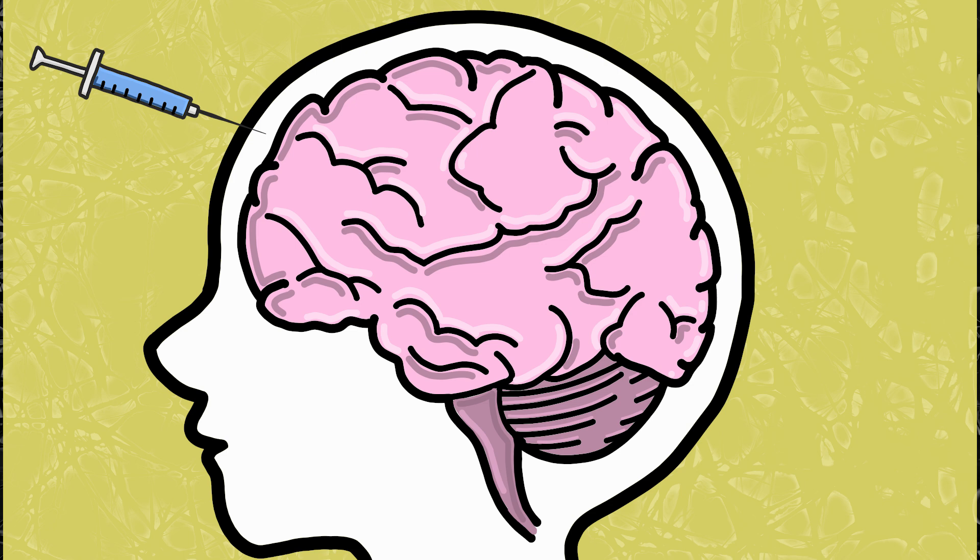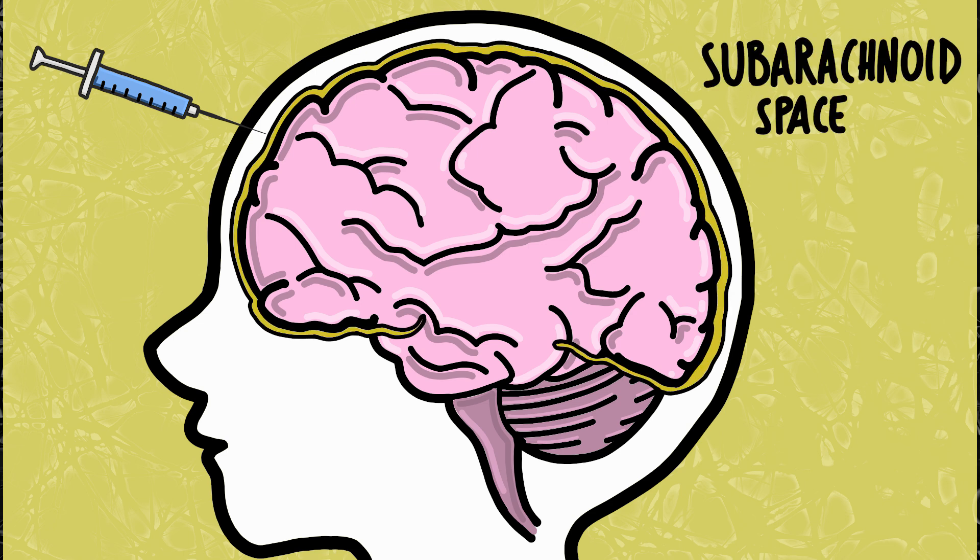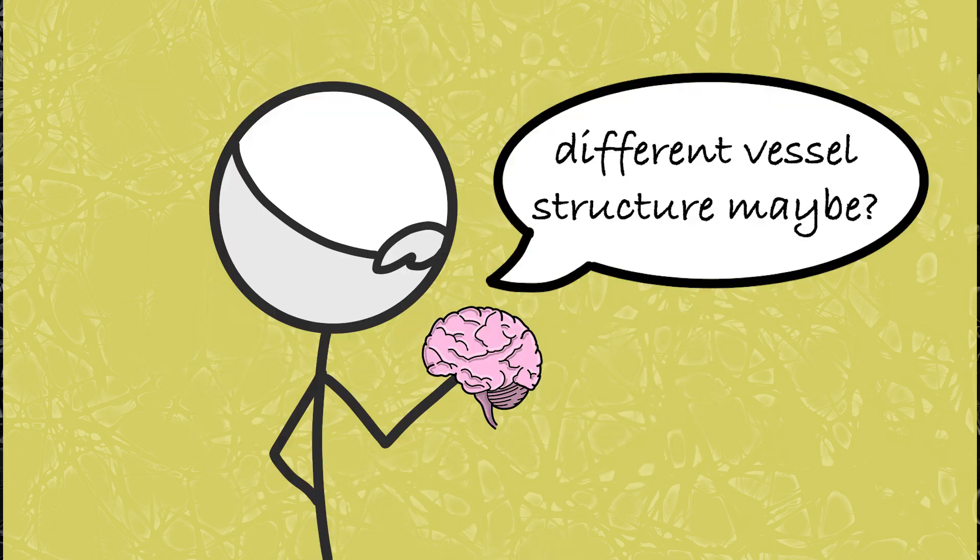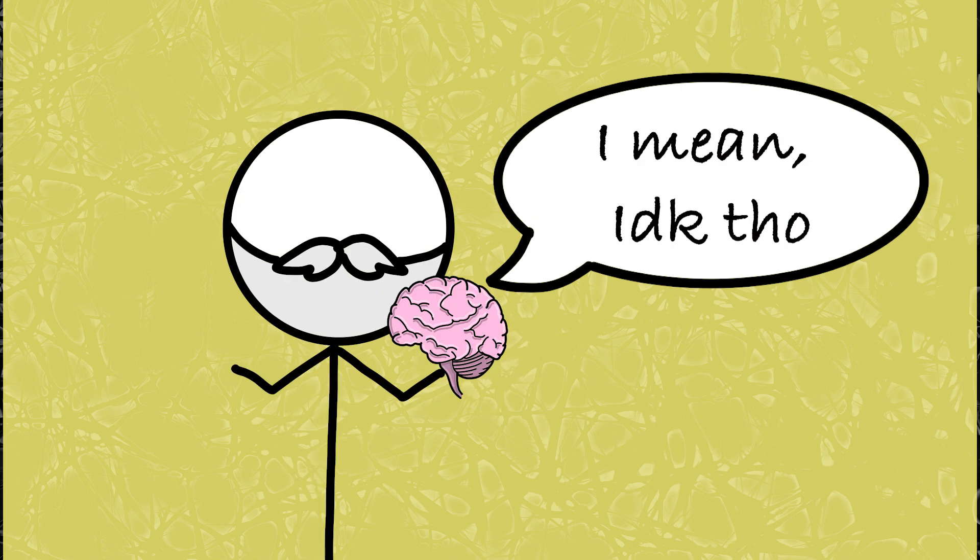Other experiments show that when those same dyes were injected under the subarachnoid space, one of the layers between the brain and the skull, the brain would turn blue, but not the rest of the body. Ehrlich thought it might be a slightly different structure of blood vessels in the brain compared to the rest of the body, not a new piece of anatomy entirely.